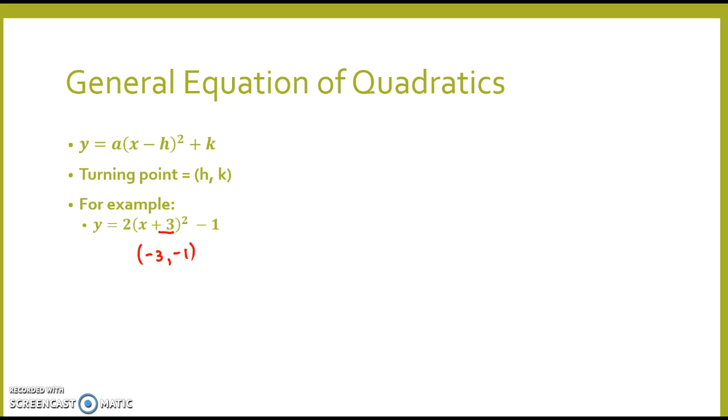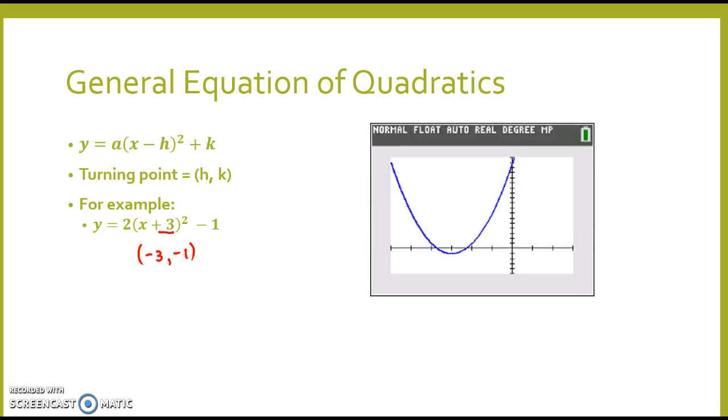If we look at the sketch of that, and here it is here, you'll notice that this graph, which I've used a graphics calculator to sketch, has the turning point at negative 3 across and negative 1 down. So that is a translation left of 3 units and down of 1 unit.